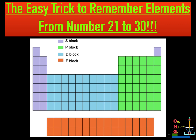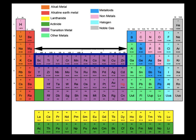So you can see there are four blocks in the modern periodic table as shown in the given image. They are S, P, D and F. We will first locate the elements from atomic number 21 to 30 in the periodic table. These elements are located in the D block. They are present in the fourth period and the groups from 3 to 12, shown by the blue border. The D block elements are also known as transition elements.